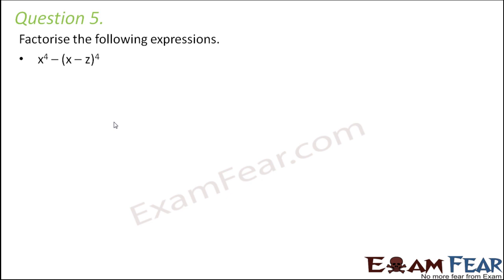Yes, you can. You can take help of the identity a square minus b square is equal to a plus b into a minus b. Because both of these terms are perfect squares.